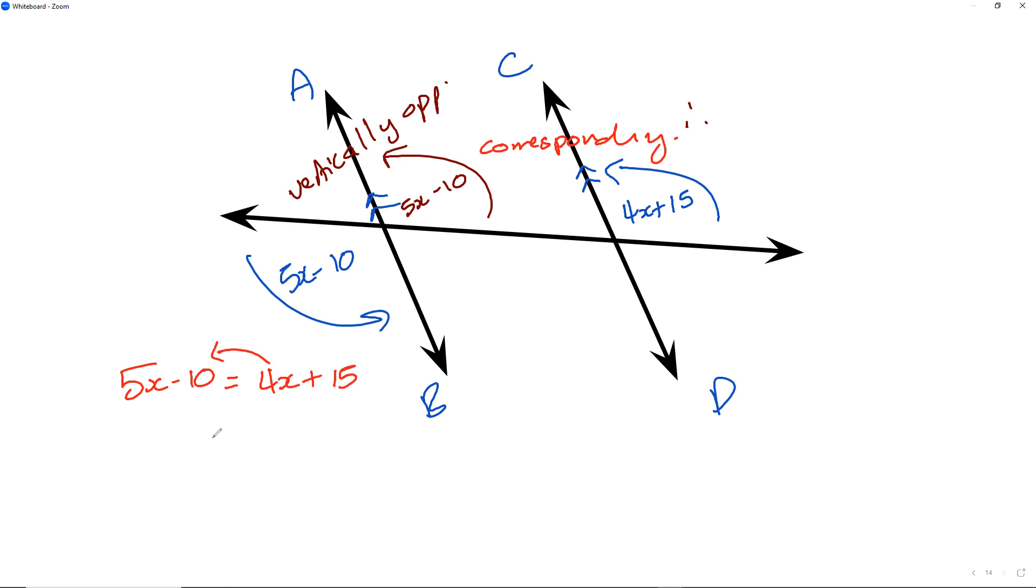Now I'm going to subtract 4x and I'm going to add 10 on the other side, so 10 plus 15. That'll become 25.